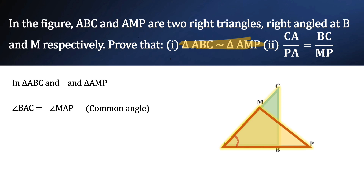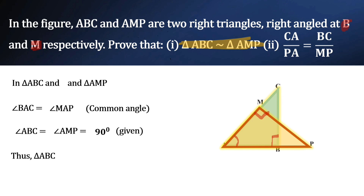We are given that triangle ABC is right angled at B and triangle AMP is right angled at M. So, angle ABC is equal to angle AMP, that is equal to 90 degrees — it is given. According to the angle-angle criterion, triangle ABC is similar to triangle AMP.